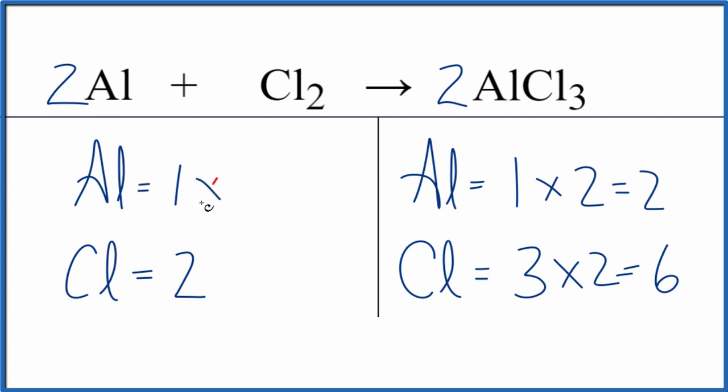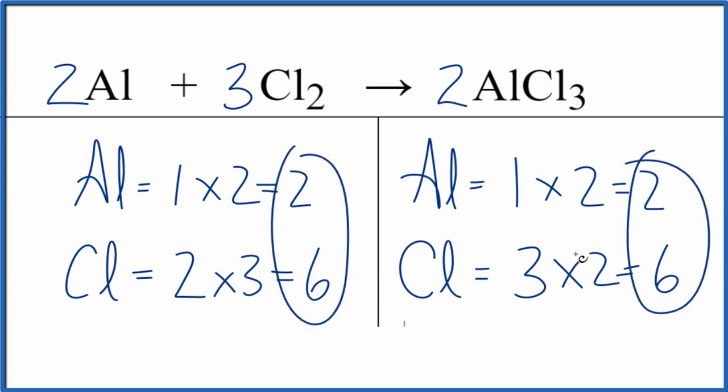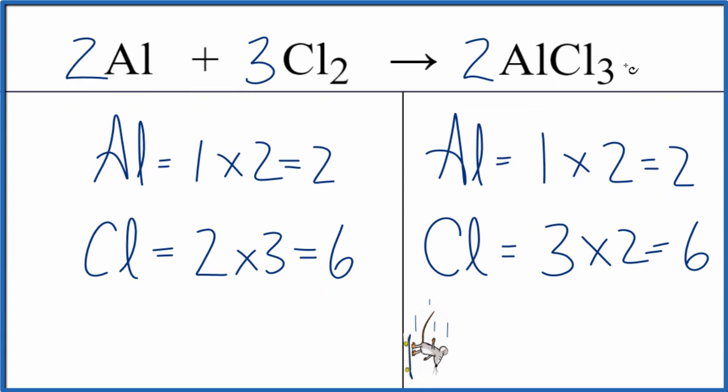One times two equals two, and then three times the two here, or two times three, gives us six. And now everything's the same on both sides. This equation is balanced.